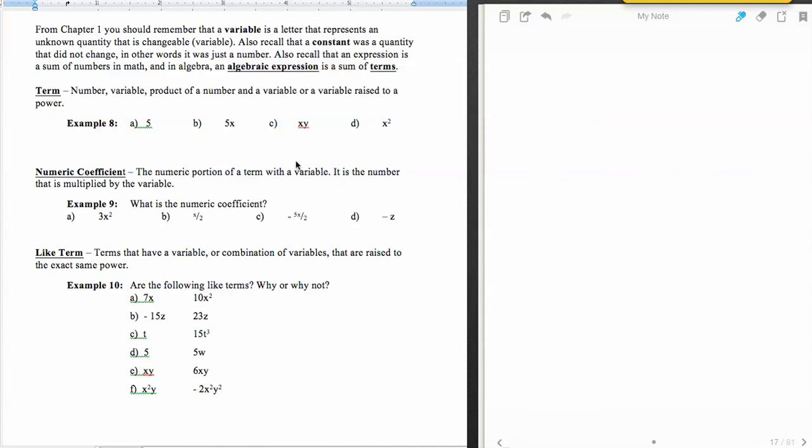Okay, now time for some vocabulary. From chapter one, we should remember that a variable is a letter that represents an unknown quantity, or a quantity that's changeable. Now your book goes into the fact that variables represent three different things, and you should read about that, but I'm not going to waste our time talking about that some more. I think as we come across them, you're going to see each of those on your own.